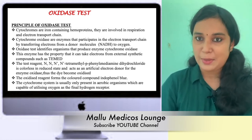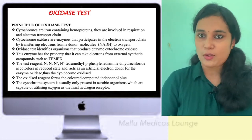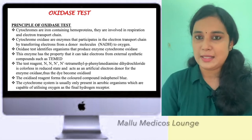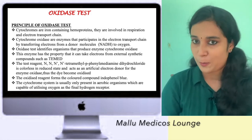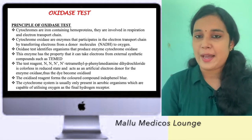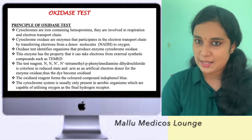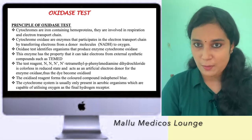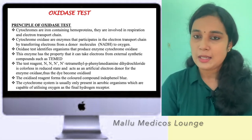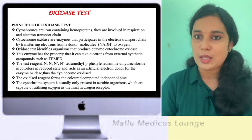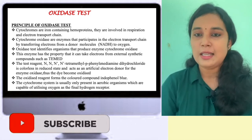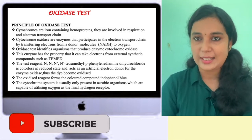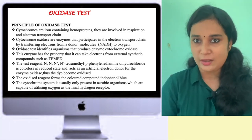We want to check this enzyme externally in the lab. When detecting cytochrome oxidase in the lab, it can take electrons from external synthetic compounds. We use tetramethylparaphenylene diamine dihydrochloride (TMPPD), an external synthetic compound whose electrons are accepted by the cytochrome oxidase enzyme.